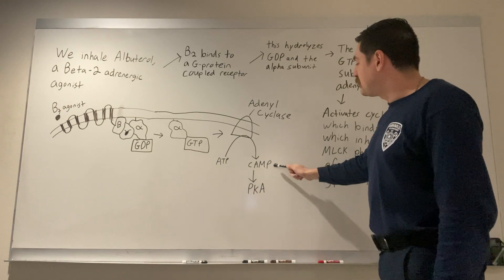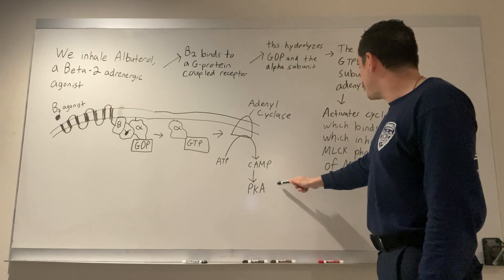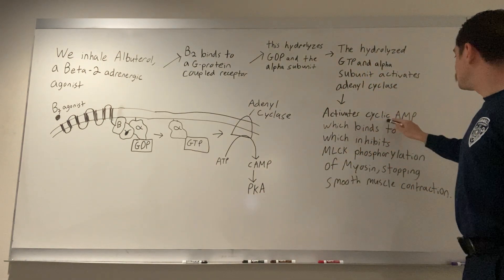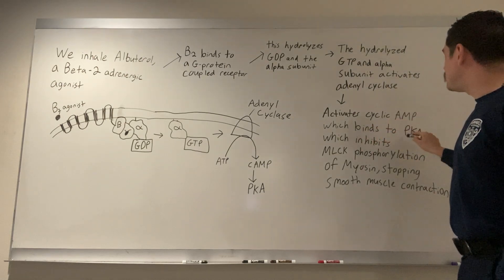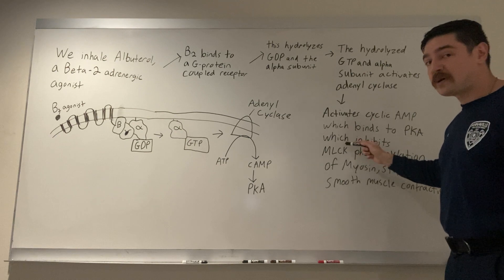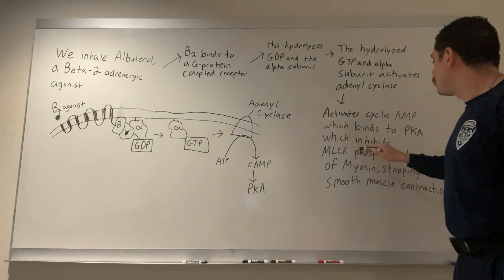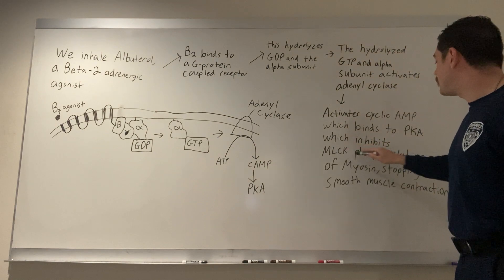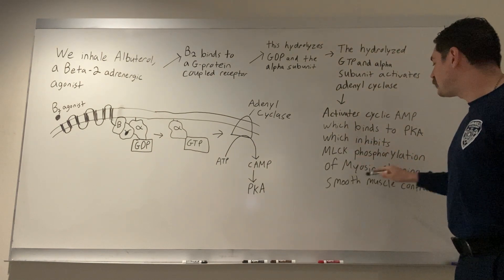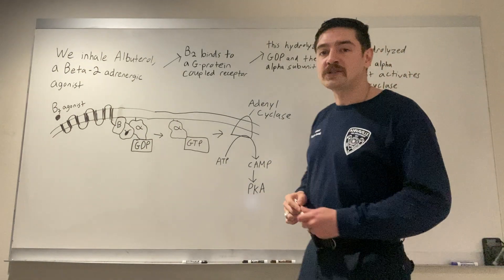The cyclic AMP binds to PKA, and PKA inhibits MLCK — myosin light chain kinase — which we talked about earlier. This inhibits MLCK phosphorylation of myosin, stopping smooth muscle contraction. That is actually how albuterol works in our body.